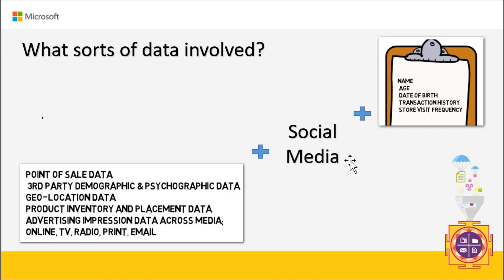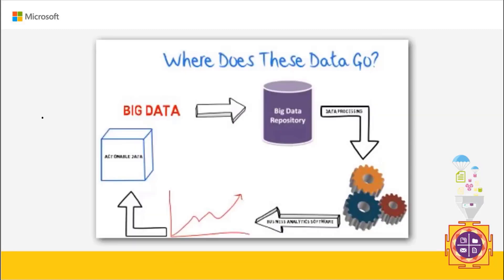Along with basic personal information, important data sources include point-of-sale data, third-party demographic and psychographic data, geolocation data, social media data, and customer behavior data — such as what kinds of posts customers make and how they react to a retailer's social media posts. Based on these inputs, we'll look into customer examples in the upcoming slides.